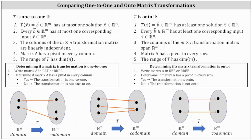A transformation is one-to-one if T of vector x equals vector b in Rm has at most one solution vector x in Rn. Or more simply, every vector b in Rm has at most one corresponding input vector x in Rn. A transformation T is onto if T of vector x equals vector b in Rm has at least one solution vector x in Rn, meaning every vector b in Rm has at least one corresponding input vector x in Rn.